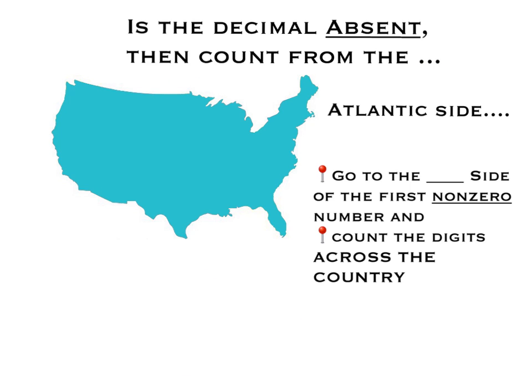When determining sig figs, 1 through 9 always count, and zeros are when you have to start thinking. Here are some rules of thumb — we're going to use the oceans across the United States, the Atlantic and the Pacific.